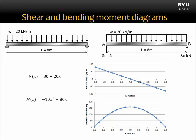In the previous unit, we focused on constructing shear and bending moment diagrams, either using the direct equation method or the graphical method. The purpose of these diagrams is to visualize how the internal shear and the internal moment change over the length of the beam. Once we have our shear and bending moment diagrams constructed, we can calculate the internal normal stress or internal shear stress that results as a function of either the internal bending moment or the internal shear force at some point in the beam.